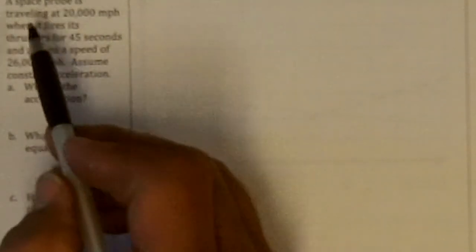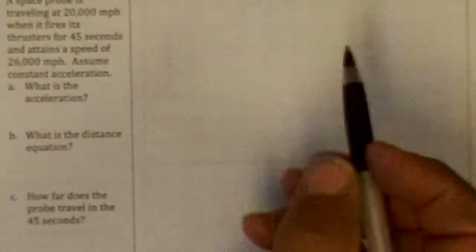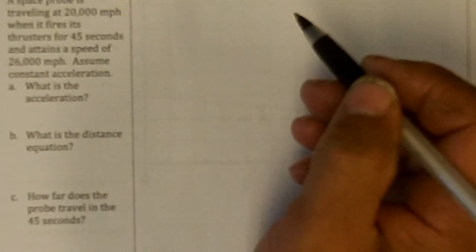Page 3. A space probe is traveling at 20,000 miles per hour when it fires its thrusters for 45 seconds and attains a speed of 26. So that is gaining speed.